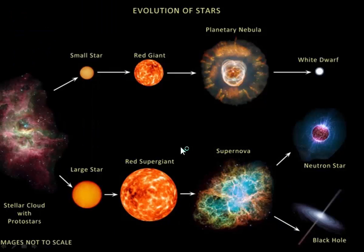So a small star turns into a red giant, planetary nebula, white dwarf. A larger star will be a red supergiant and then will explode as a supernova and turn into a neutron star or a black hole if the core is greater than 2 solar masses.